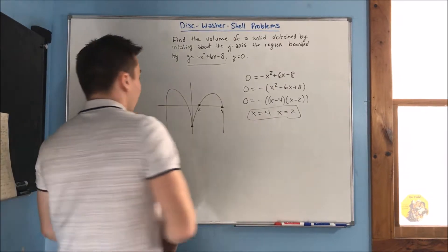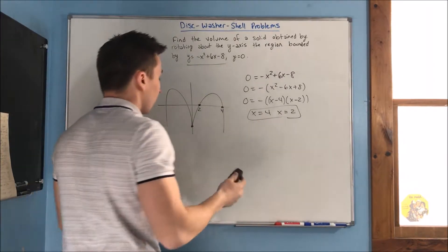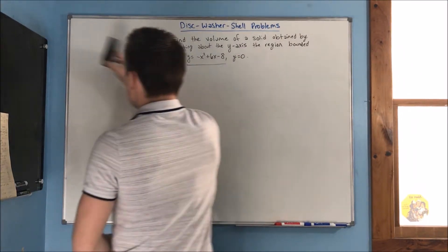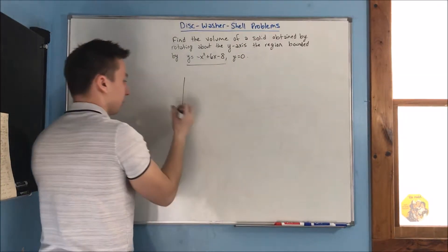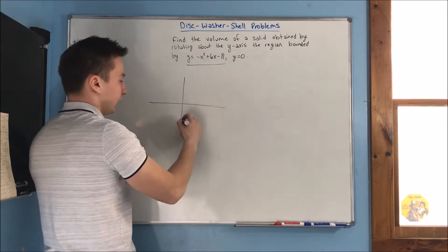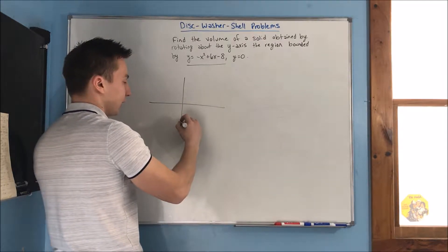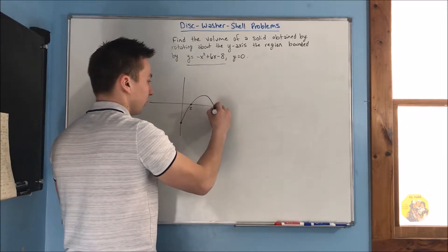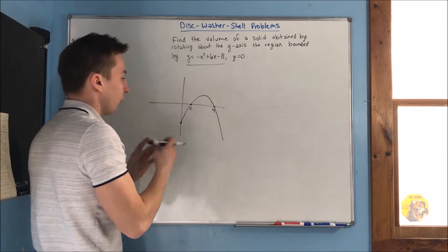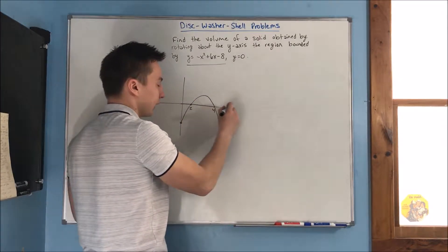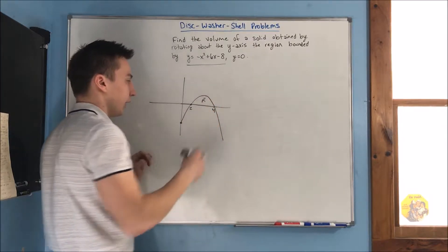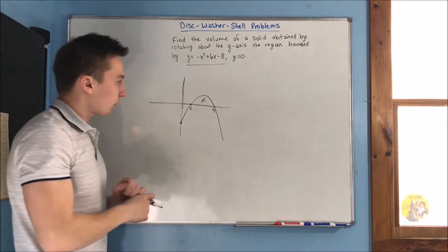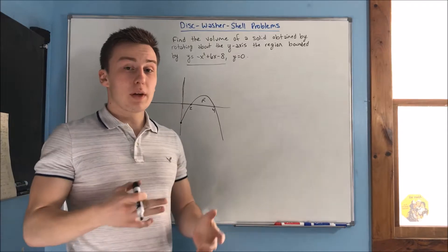Now we have a complete picture of the graph: a parabola starting at negative 8, crossing the x-axis at 2 and 4. Our y equals 0 line is the other bound, giving us our region. We are rotating about the y-axis.